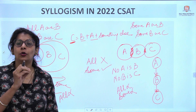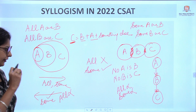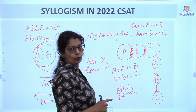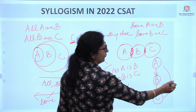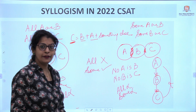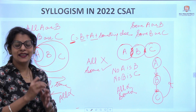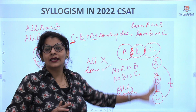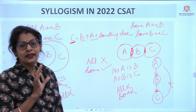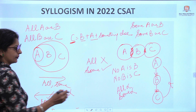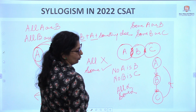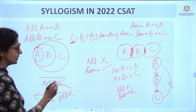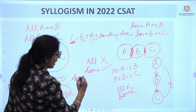Which conclusions will be true? The 'no' ones. If the conclusion is 'No C is B' — true. 'No B is A' — true. But if the conclusion is 'No C is A' — false, because we cannot see that directly. The things which are directly visible and directly crossed are correct. Things you cannot see are incorrect. Now, conclusion 'Some A are not B' causes confusion.